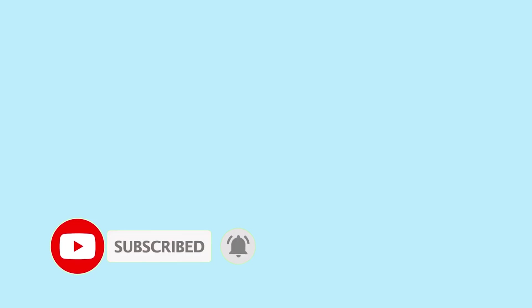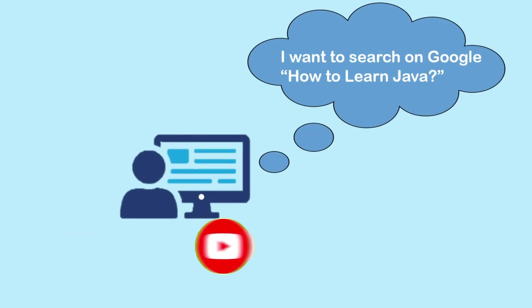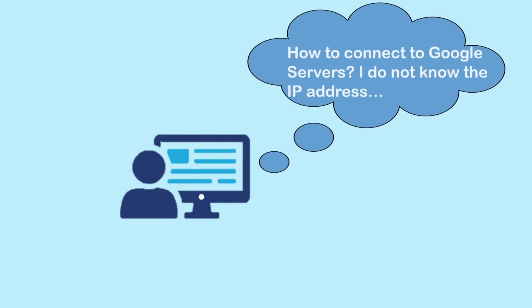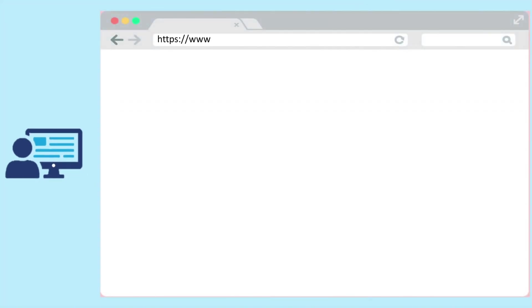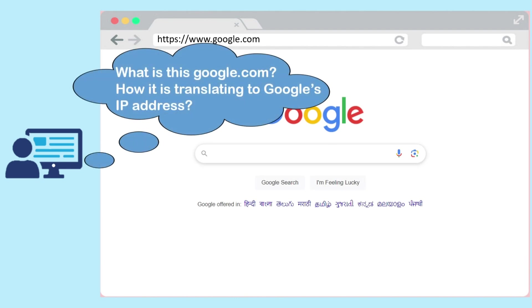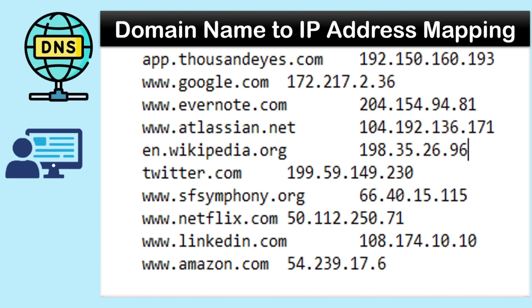Suppose you want to search something on the internet using Google. From your computer you need to connect to Google servers via the internet, and to do that you must know the IP address of servers where Google services are running. But do we really know or directly use the IP addresses of Google servers? No — we just simply connect to www.google.com. So what exactly is google.com? It's a human readable domain name which is mapped to the IP address of Google servers, and where all these mappings are present is known as a Domain Name System or DNS.